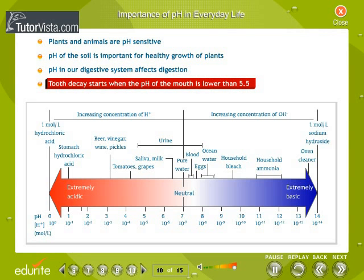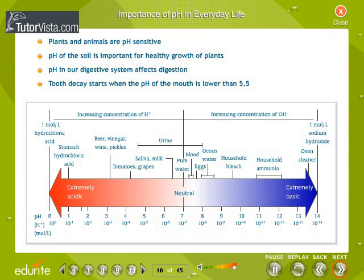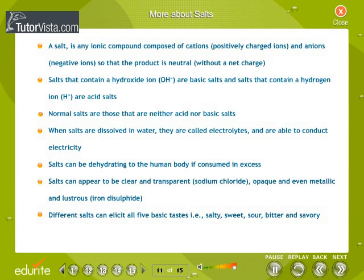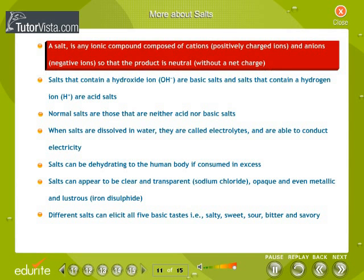Tooth decay starts when the pH of the mouth is lower than 5.5. A salt is any ionic compound composed of cations — positively charged ions — and anions — negatively charged ions — so that the product is neutral, without a net charge.